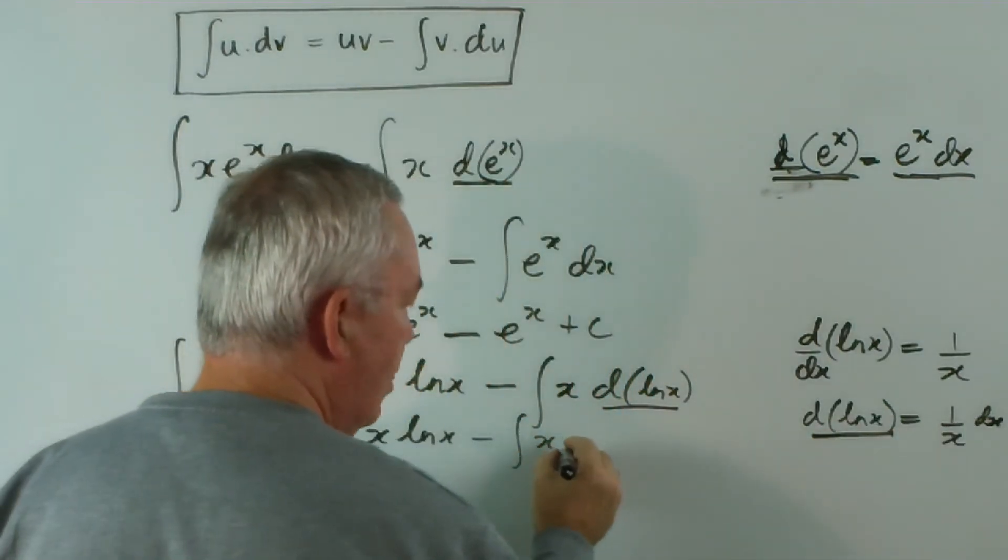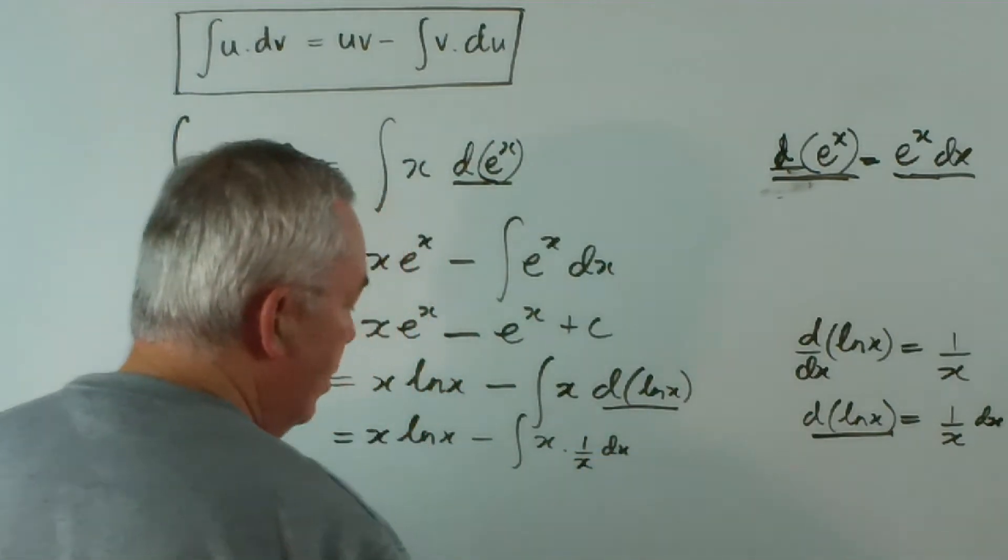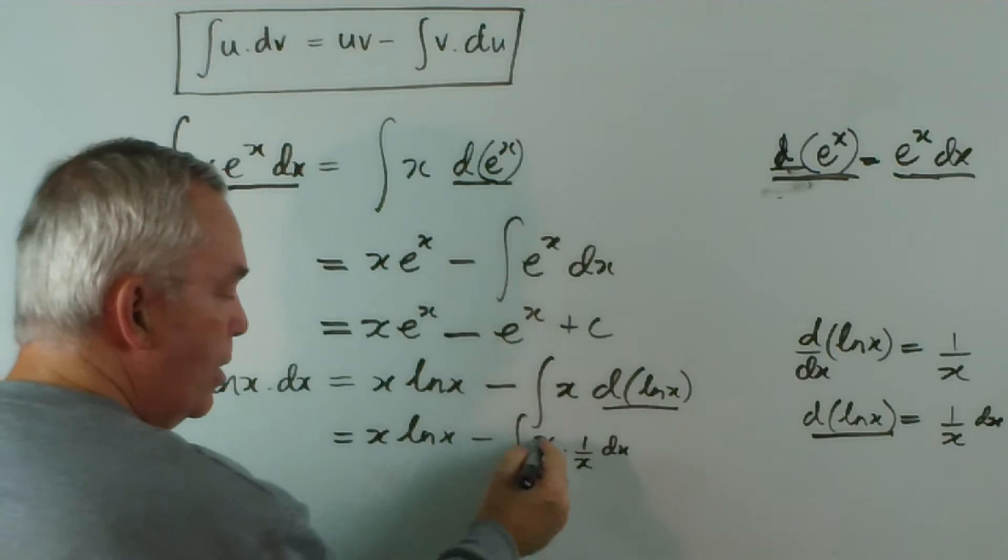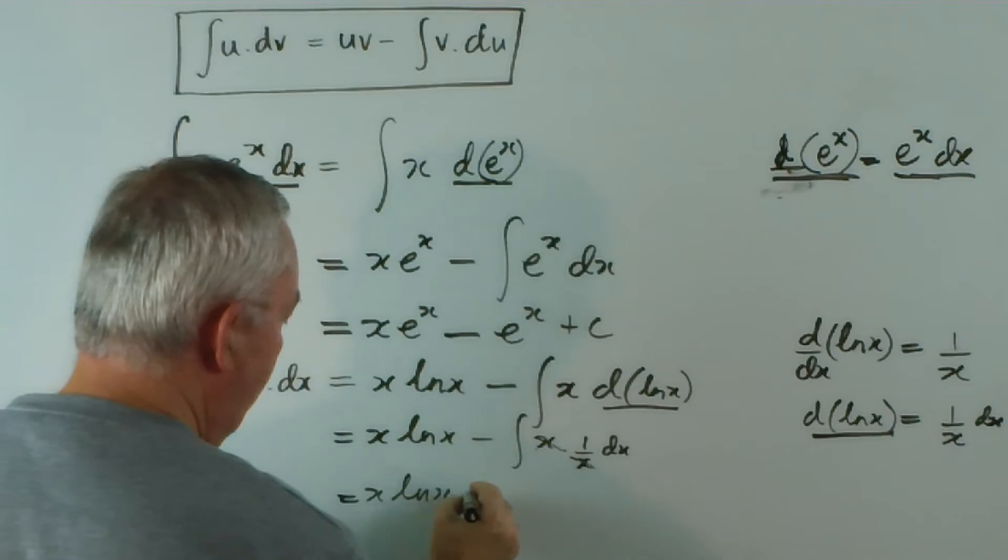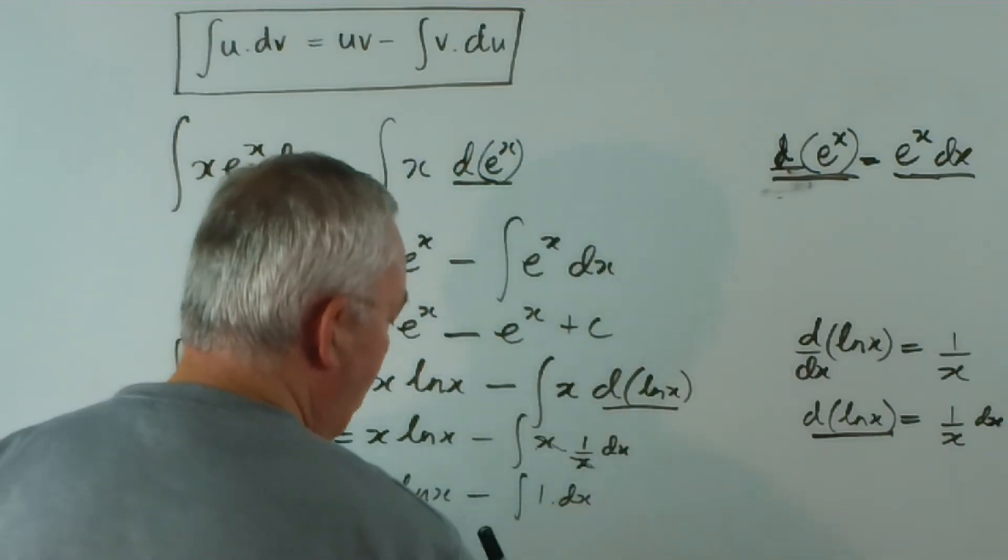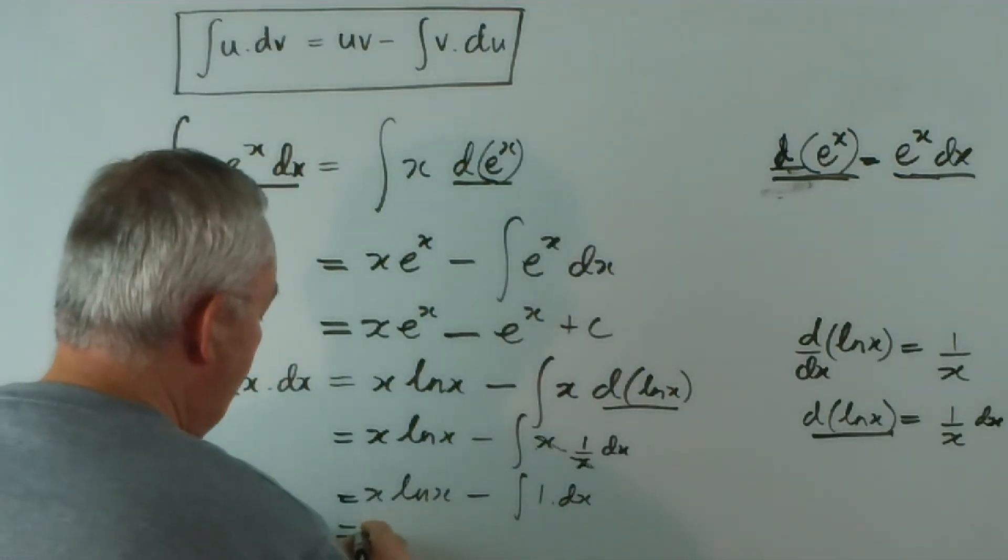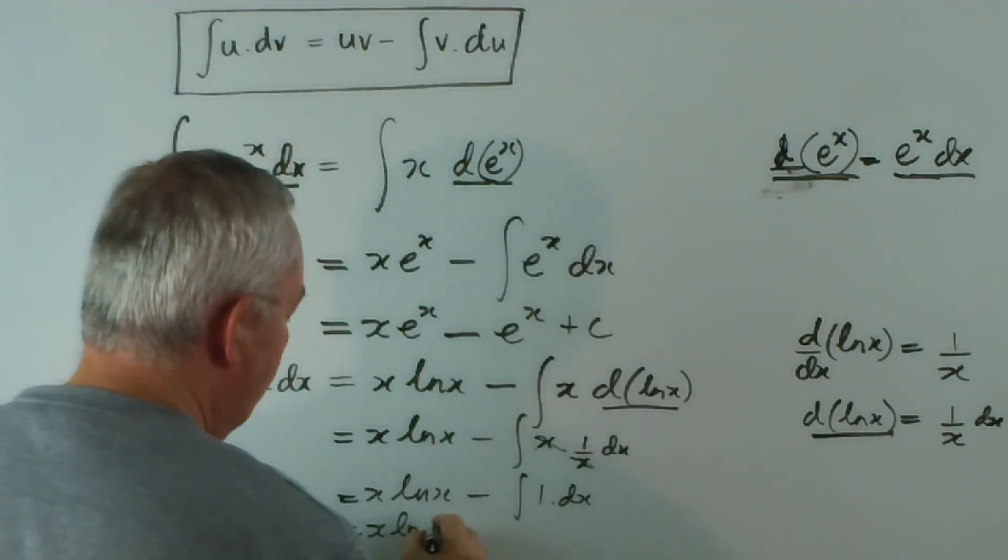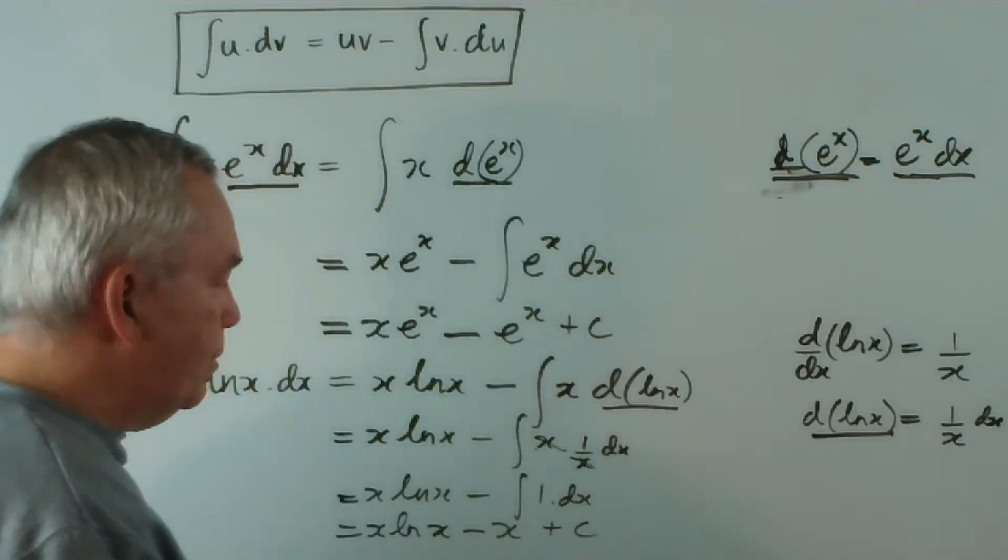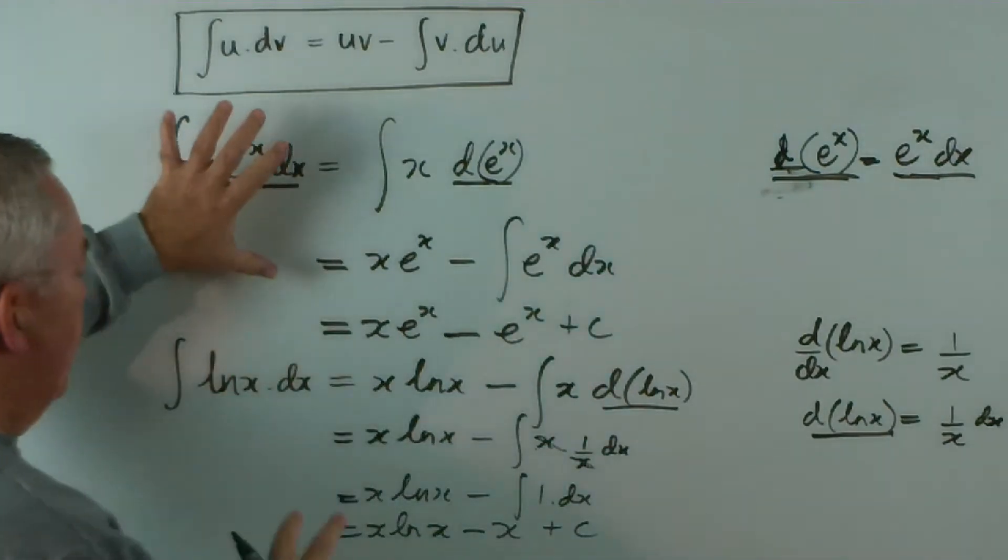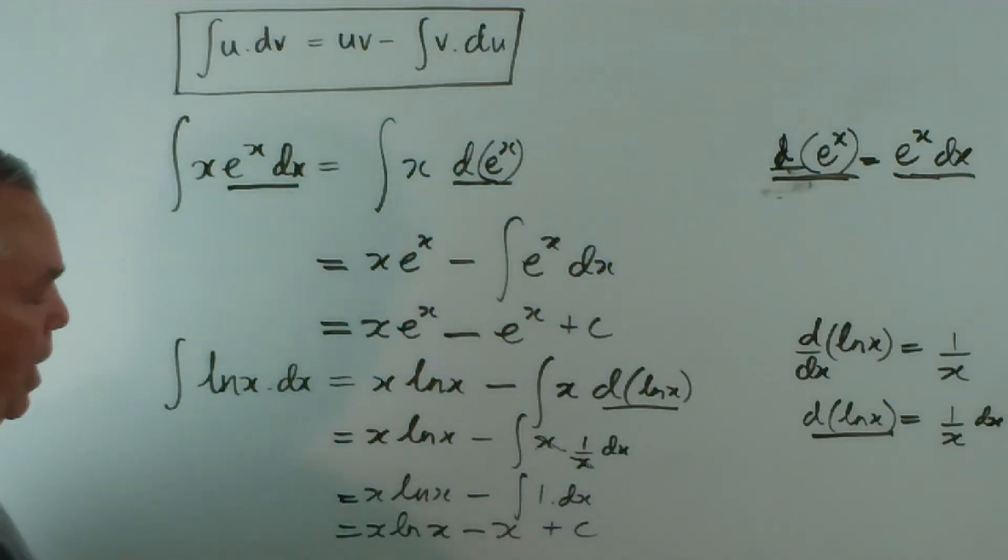So, I've got the integral of x times 1 over x dx. Now, that's rather nice, because x times 1 over x is 1. And that is one of your most basic integrals from when you first learnt to integrate. I think we're just going to fit this on the page. x log x minus the integral of 1 is x plus C. So, we've done... we've performed two integrations here, using integration by parts as a method.